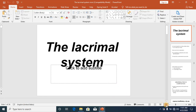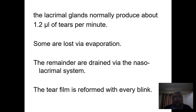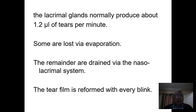Today's lecture is about the lacrimal system. The lacrimal system consists of the lacrimal glands and the lacrimal drainage system. The lacrimal glands normally produce about 1.2 microliters of tears per minute. Some of these tears are lost by evaporation and the remainder is drained via the nasolacrimal duct into the nasal cavity.